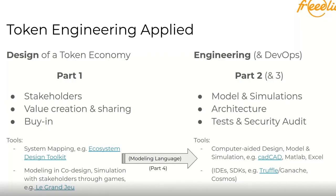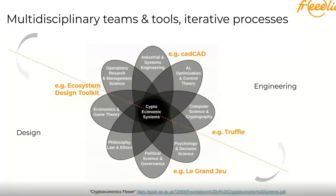On the engineering side, one can model and simulate in Excel — which most token engineers currently still do. Power system engineers use MATLAB, and we have many token engineers from those backgrounds. Now they're getting into cadCAD, which I'll go into later. From that model and simulation of how the token network is designed and how it reacts at the agent and system level, we then need to pour it into code. The systems are multidisciplinary, so the teams need to be multidisciplinary too, and the tools we use come from different areas.